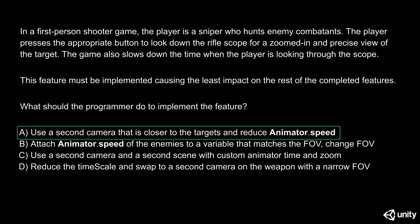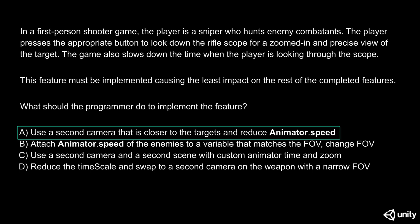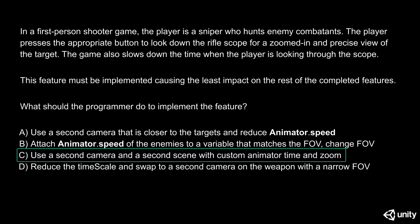Starting with Answer A: use a second camera that's closer to the target and reduce the animator speed. This is not going to be good enough for our project since reducing animator speed doesn't impact the rest of the game. Answer B: attach animator speeds of the game to a variable that matches the field of view and change the field of view. This also is not going to work since changing the animator speed for any other reason will have an impact on the camera, and this is not correct behavior for the camera. Answer C: use a second camera and change the scene with custom animator time and zoom. Using a second scene might be a source of bugs since we're duplicating all the assets and creating new logic on a separate scene. This could work, but let's keep reading to see if we find a better solution.